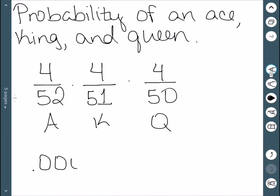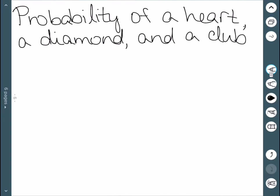we get 0.00048 or 0.048%. This time we'll look at the probability of drawing a heart, then a diamond, and then a club. Well, if we start with a heart, we know there are 13 out of a total of 52 cards.